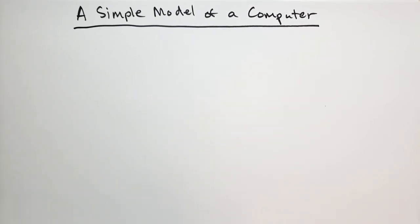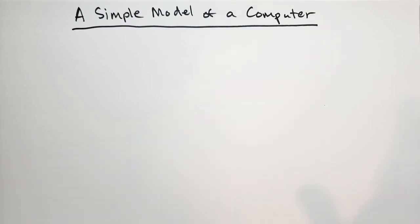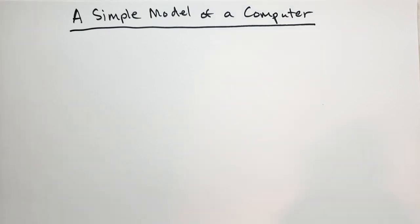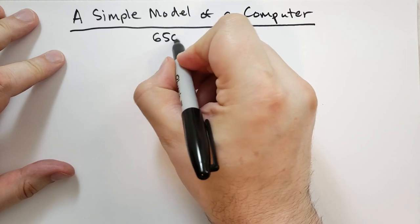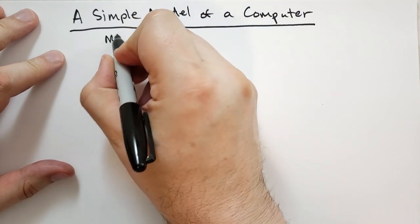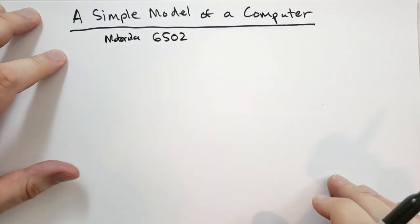But a lot of the things in this model are just going to be plain out wrong. That's not how computers actually work. So the model that we're going to be based on is the old 6502, the Motorola 6502s. Again, when I was young,